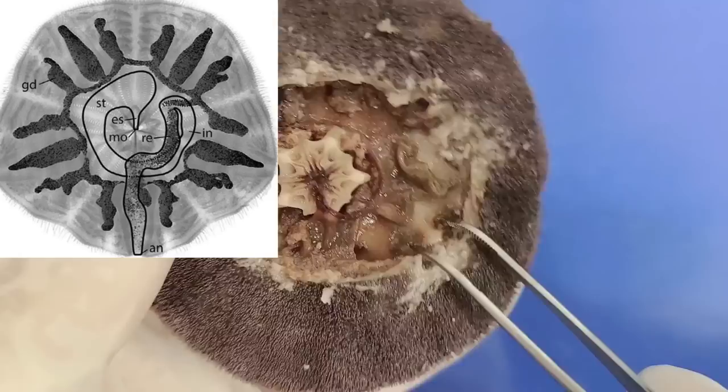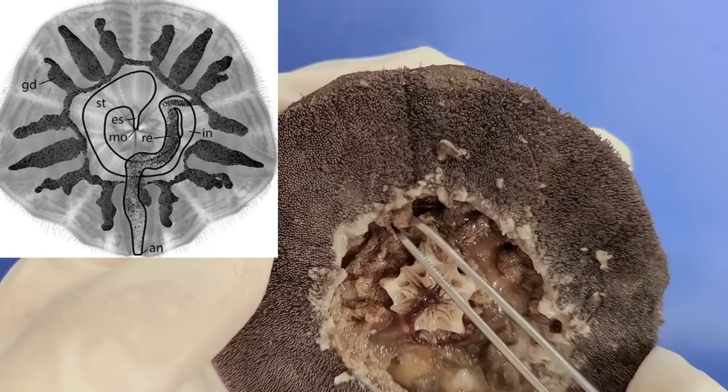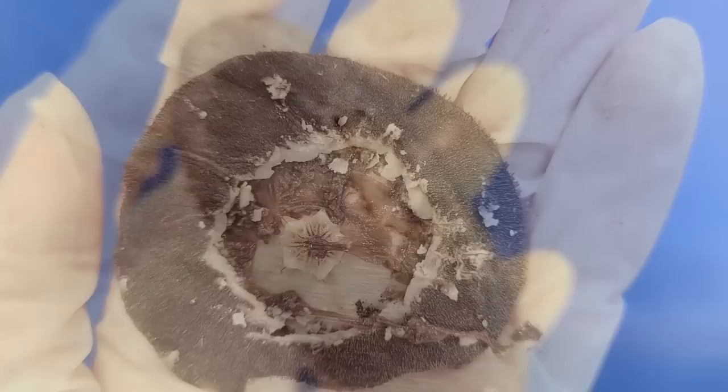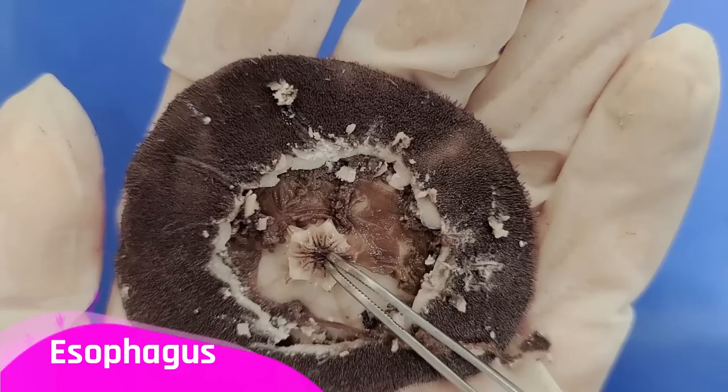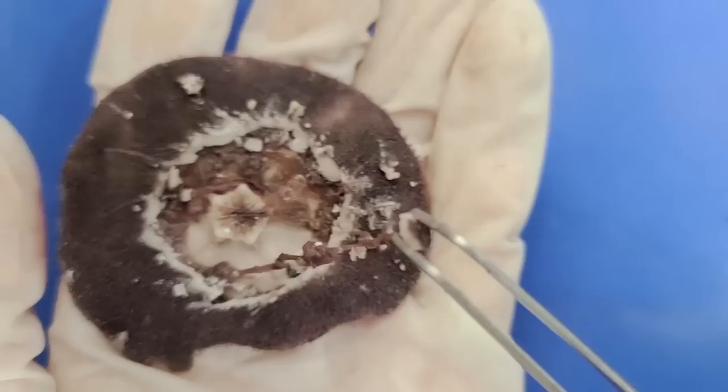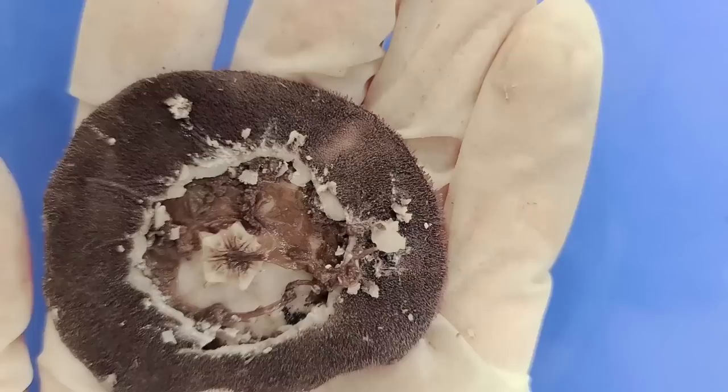The stomach then leads into the intestines, but you can't really see them here. The intestines then lead into the rectum, and then the anus, which would be somewhere on the side as we saw before. Here's another sand dollar I dissected where you can see the intestines a little better. Here's the esophagus, which leads into this white pouch-like structure — the stomach — and then the stomach leads into this thinner intestine, which then leads out into the rectum and the anus.